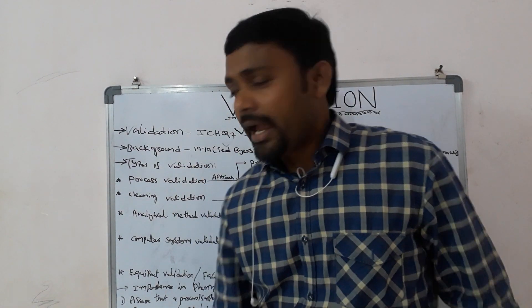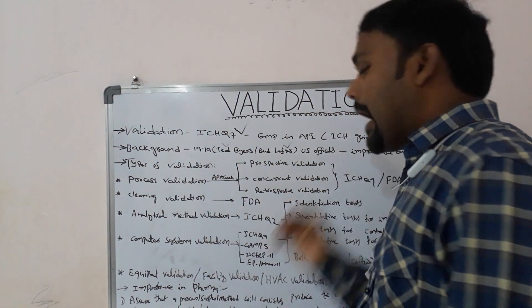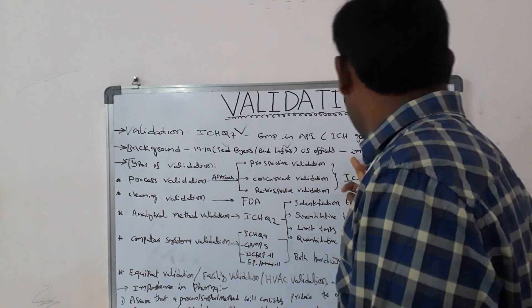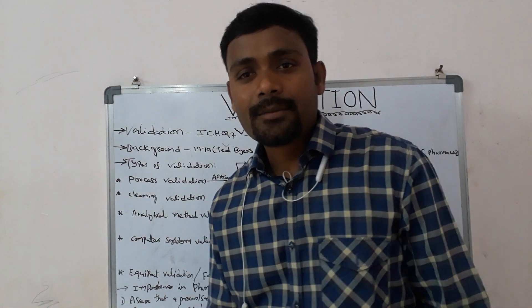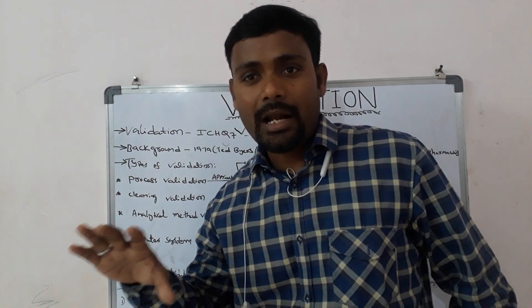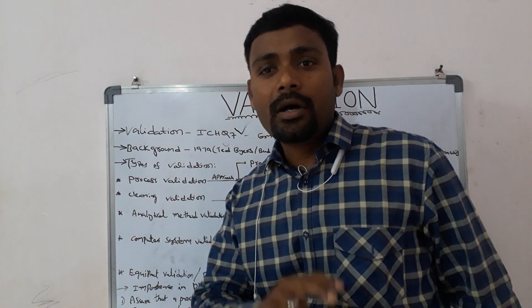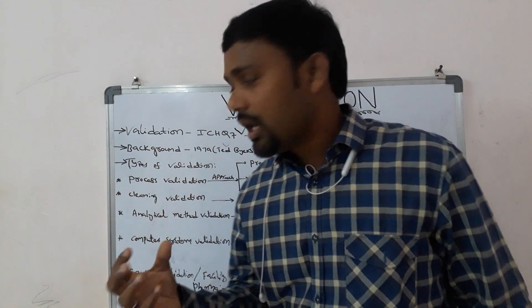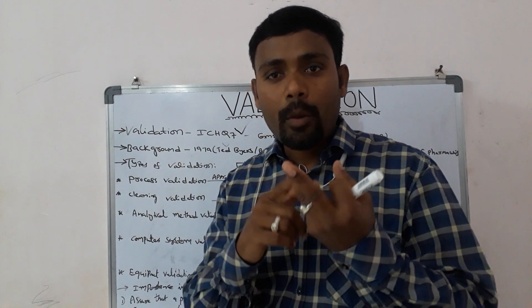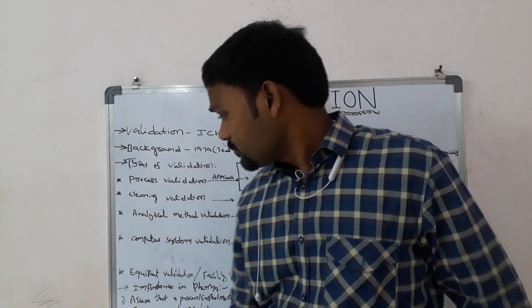In the year 1979, two FDA officials — Ted Byers and Bud Loftus — introduced the term 'validation' in the pharmaceutical industry to improve the quality of pharmaceuticals. During inspections, they identified gaps and inconsistencies in sterile manufacturing processes and introduced validation parameters. It was first applied to sterile bag manufacturing processes and later spread to other aspects: environmental control, media fills, equipment, purified water systems, and more.